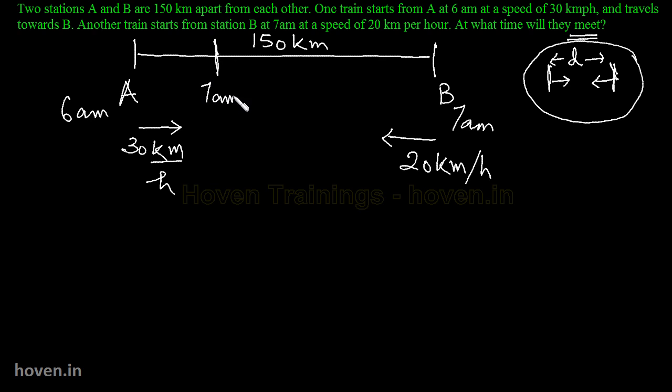Yeh haan peh 7 am lagaun. Or mele ko pata chal jayegi 7 beje yeh train ne yeh distance kitna cover kar liya hooga. Toh us mein se mein isko minus kar dunga. 150 mein se isko minus kar dunga. Toh yeh haan peh situation ban jayegi. Ki eek train is point se or eek train is point se ikathi chalti hai. Toh yeh kab milti hai. Voh mele ko is fundamental se pata chal jayegah.